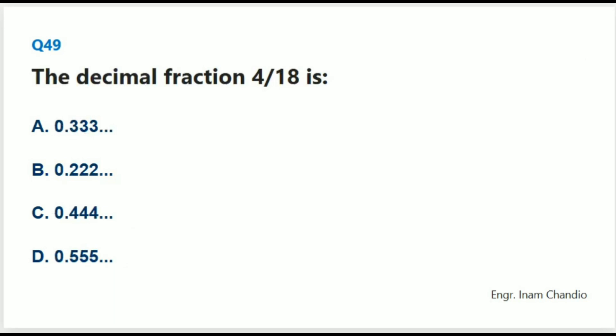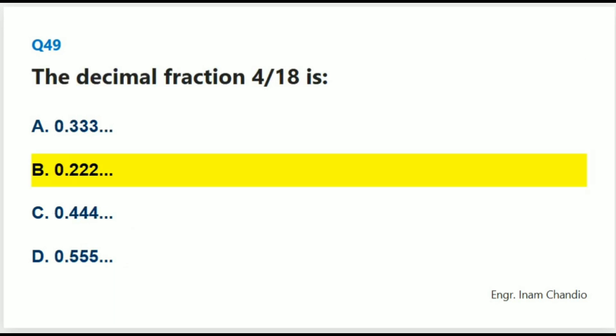The decimal fraction for 2/9 is: The correct answer is B. 0.222.